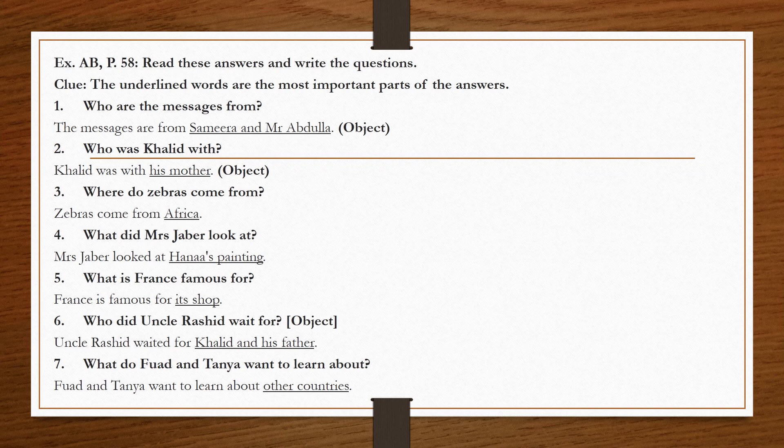Number four: 'Mr. Jabir looked at Hana's painting.' We underline 'Hana's painting' — it's a thing, so we use 'what.' No auxiliary exists but the verb is past tense, so we use 'did.' Result: 'What did Mr. Jabir look at?'